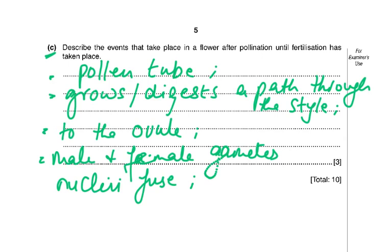Part C: describe the events that take place after pollination and fertilization. The pollen tube grows and digests a path through the style, reaching the ovule where the male and female gamete nuclei fuse. The pollen grain releases enzymes to digest the path — it is just the nucleus of the pollen that travels, fusing with the female nucleus in the ovule.